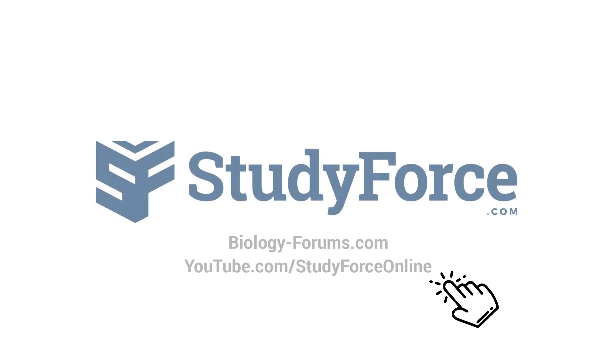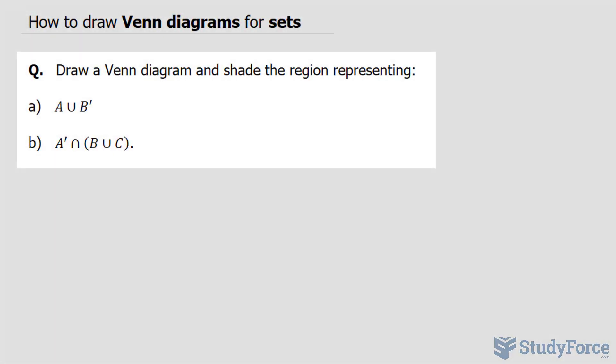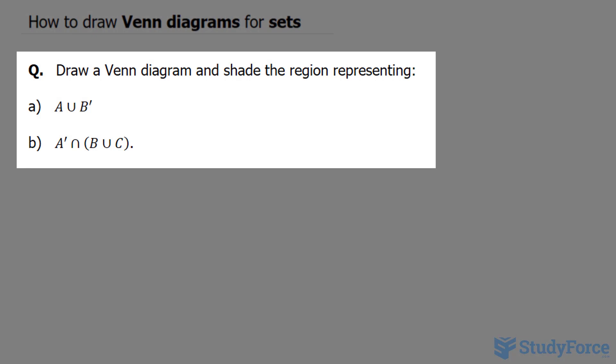In this lesson, I'll show you two examples on how to draw Venn diagrams for sets. The question reads, draw a Venn diagram and shade the region representing A and B.